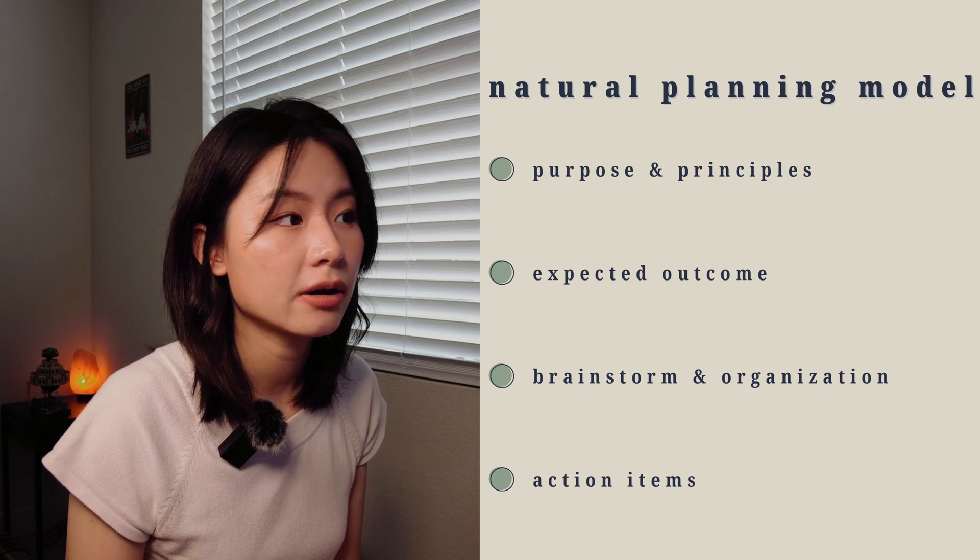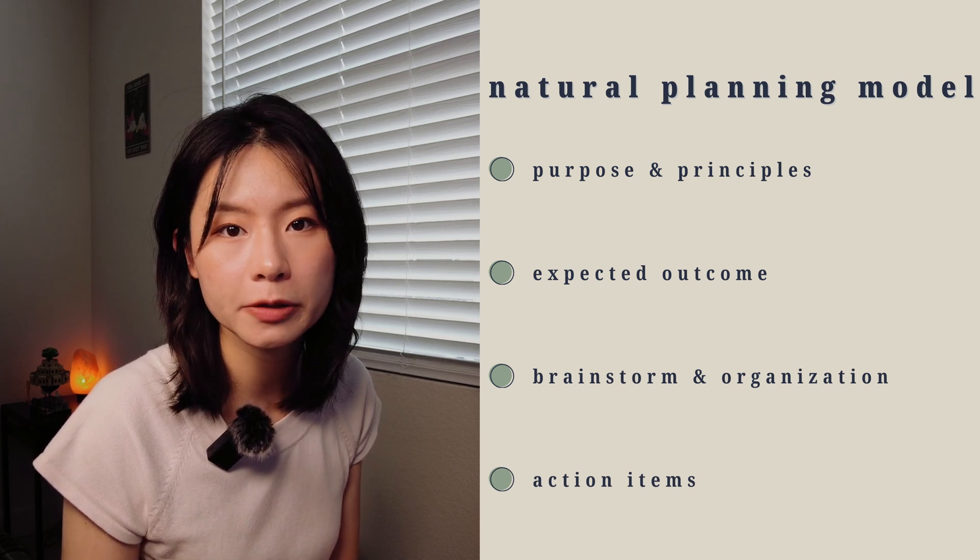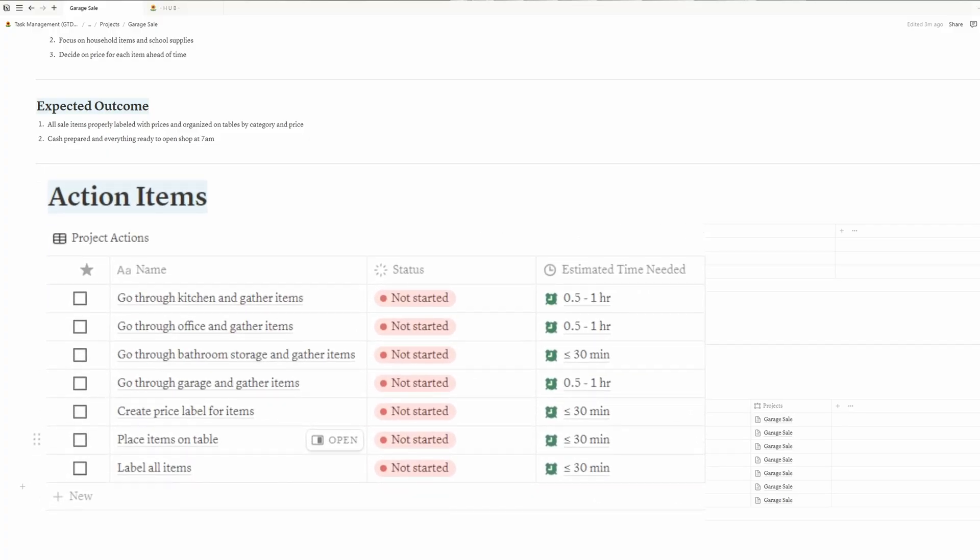For action items, I always revisit my purpose, principles, and expected outcomes to make sure that everything I do aligns with my vision. For this project, I needed to go through the house and gather items I no longer need. I divided these tasks by location, assigning an action to each part of the house. When creating action items, I like to keep it simple: one line equals one action. This approach helps me gauge the time required more accurately and gives me a more detailed view of the project. Once all the action items are listed, the planning is done. Not all projects need such detailed mapping. While planning for complex projects can take up to an hour, most can be done in just five minutes. Personally, I prefer to capture the project titles during my daily review and map out the project planning during my weekly review.